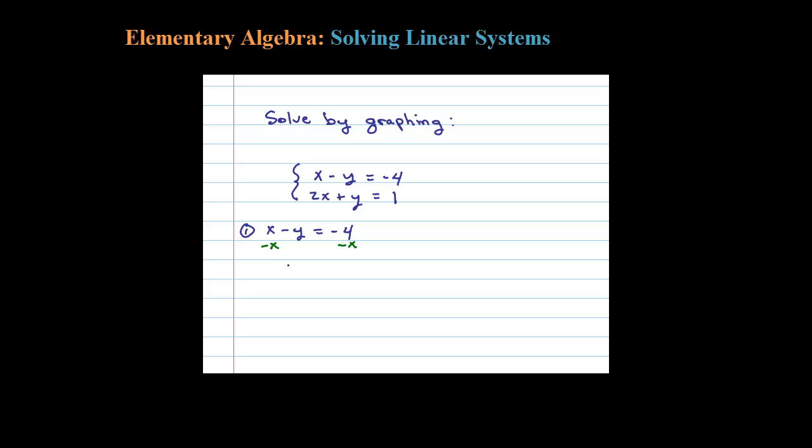Let's solve for y on both of these and find what's called the equivalent system. Dividing here by negative 1, be careful when you divide by negative 1 - you have to divide both of these terms by negative 1, and that leaves me with y equals x plus 4.